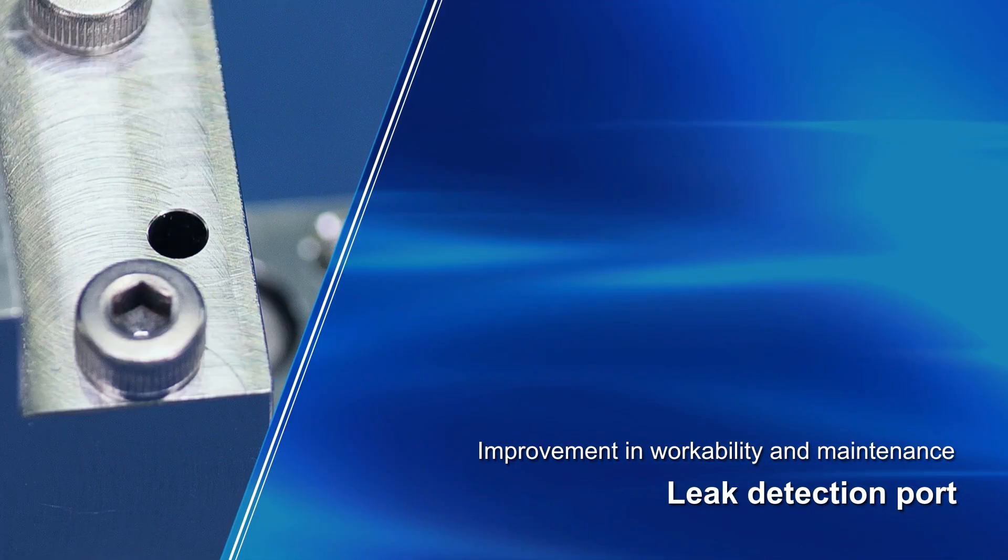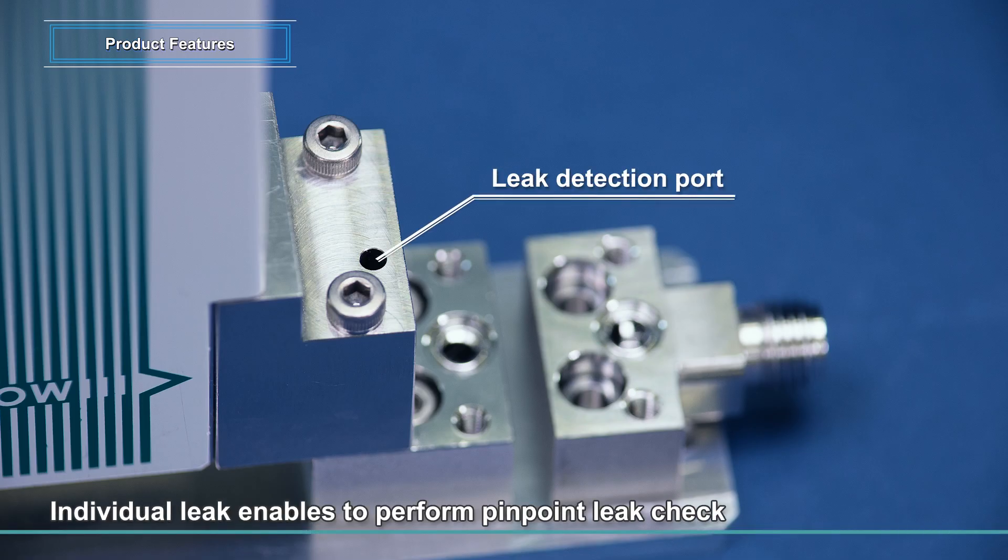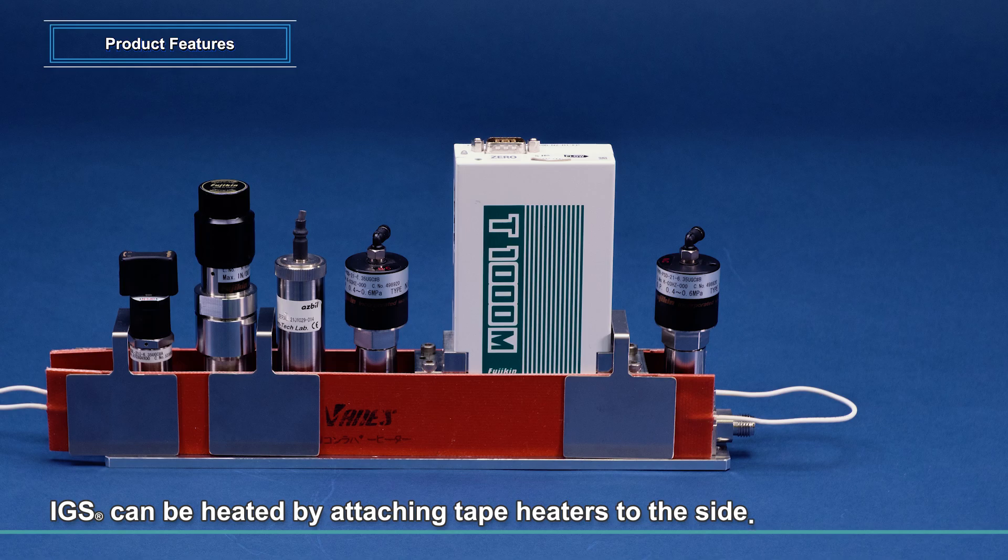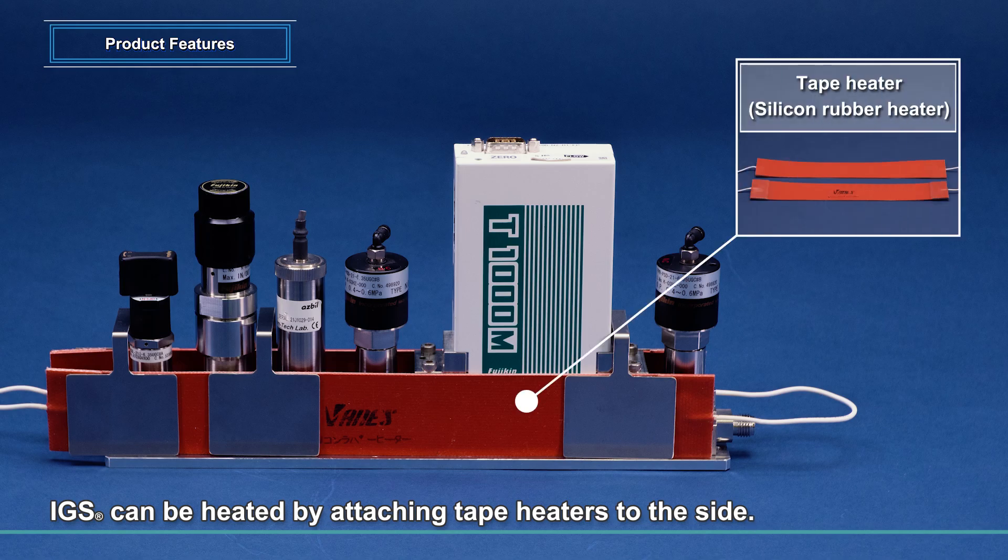Leak detection port: Top components are equipped with a leak detection port for each seal part, allowing leak detection with pinpoint accuracy. Tape heaters: Being flat on both sides, IGS can be heated with tape heaters, simply sandwiching the sides.